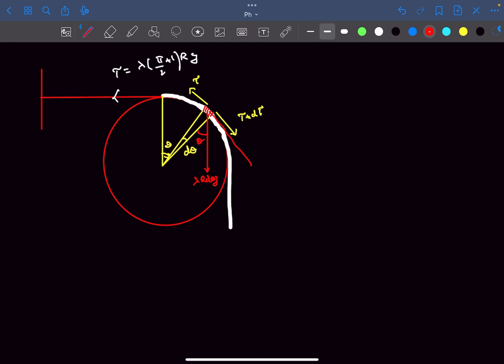This angle is theta. The component of the weight along the tangent is lambda R dθ g sin(θ). From here we get dT = -lambda R g sin(θ) dθ.